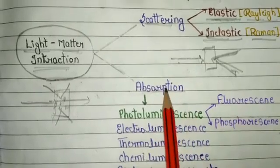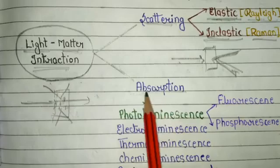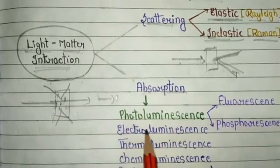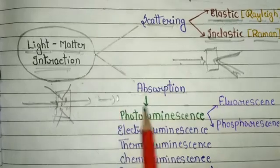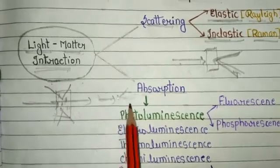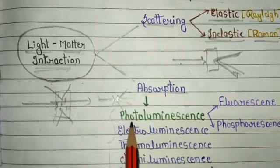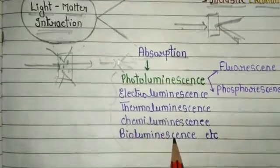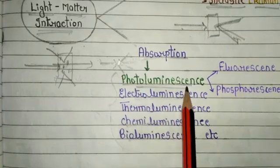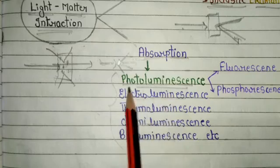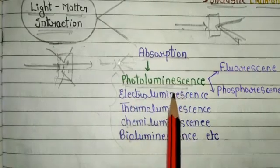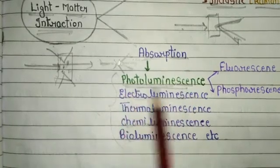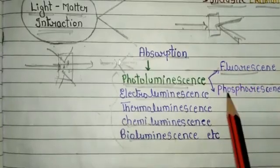The second phenomenon is absorption. When a sample absorbs electromagnetic radiations — light, ultraviolet, or visible spectrum — it emits five kinds of light: photoluminescence, electroluminescence, thermoluminescence, chemiluminescence, and bioluminescence. Photoluminescence is defined as light emission from any form of matter after the absorption of photons. It is one of the many forms of luminescence. Photoluminescence is of two types: fluorescence and phosphorescence.